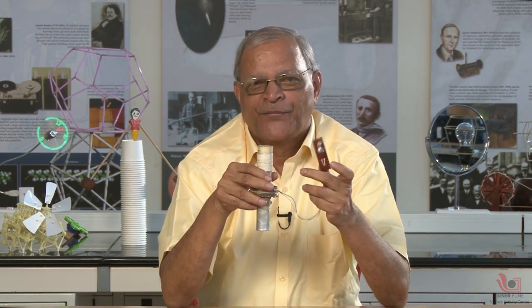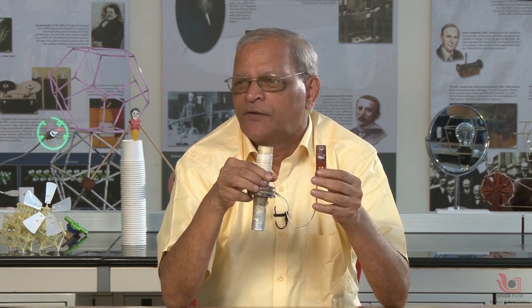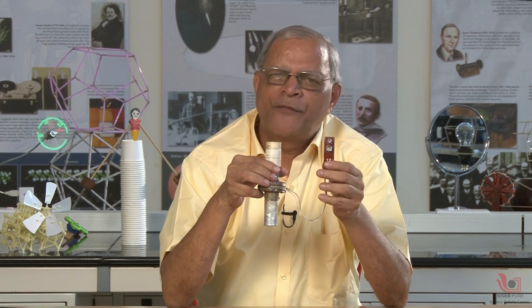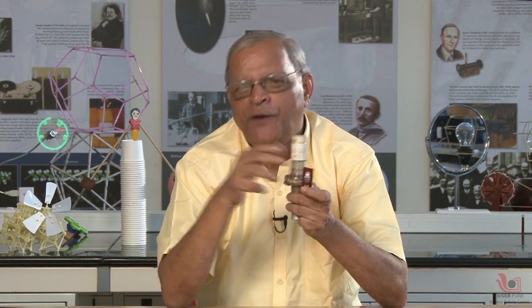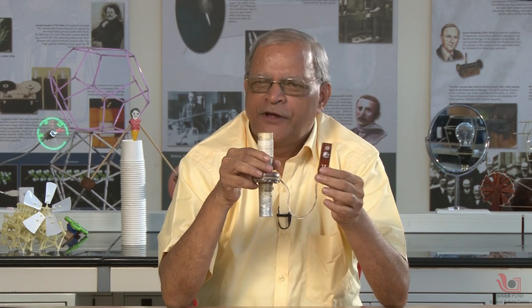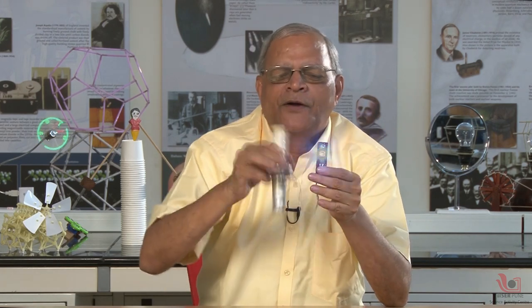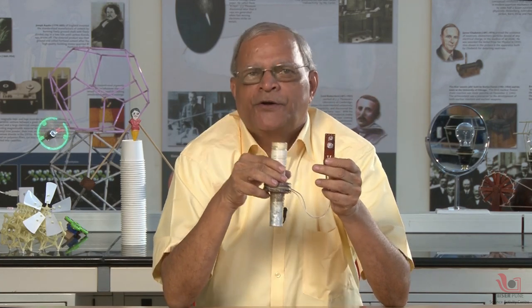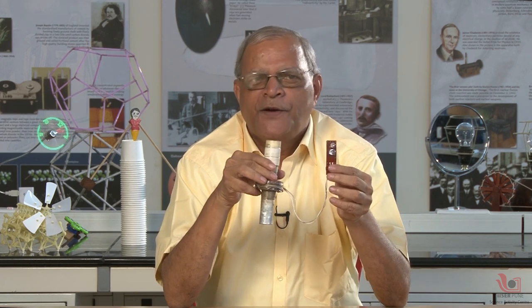That is very interesting and very important. Faraday's law says that when you make a movement of a magnet through the coil, or the coil moves through a magnetic field, we can generate current and EMF. And that current depends upon dΦ/dt — the rate of change of flux with respect to time.